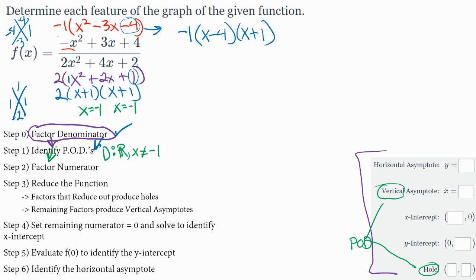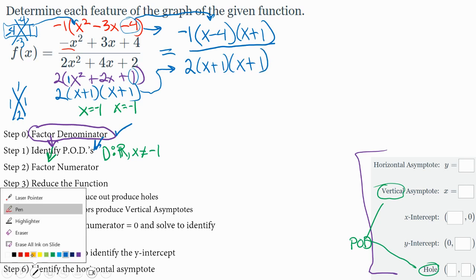So the top factors to be negative 1 times x minus 4 times x plus 1. Now keep in mind, I can only jump from the magic numbers to the magic factoring when the a value is 1. If it was any other number, I have to use that grouping technique that we have practiced. And then that's all over our factored form on the bottom, bringing this over and up, which is 2 times x plus 1 times x plus 1.